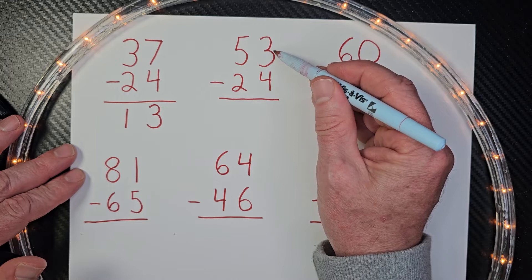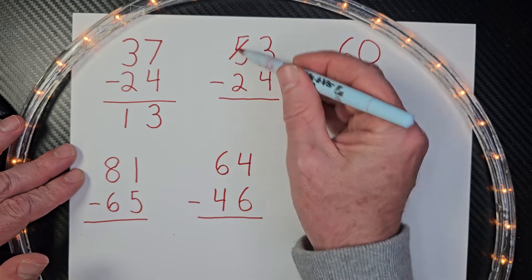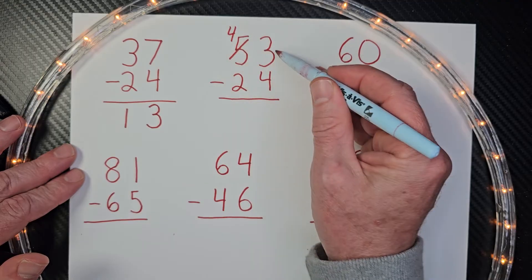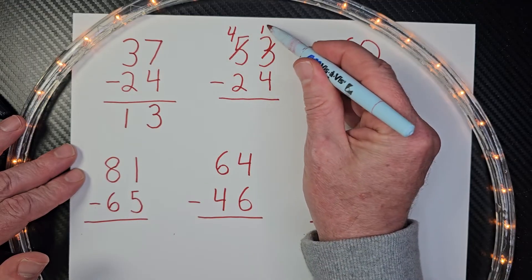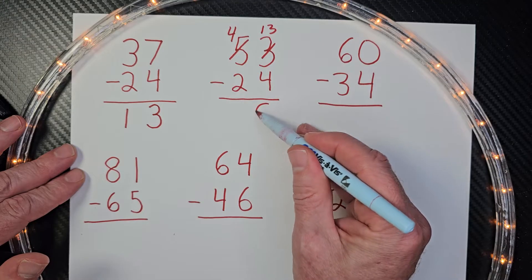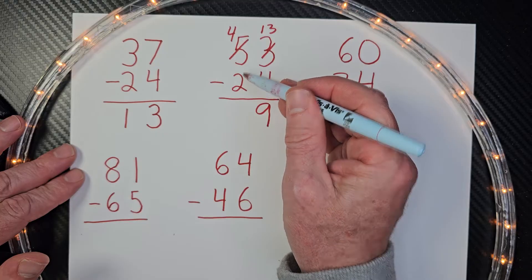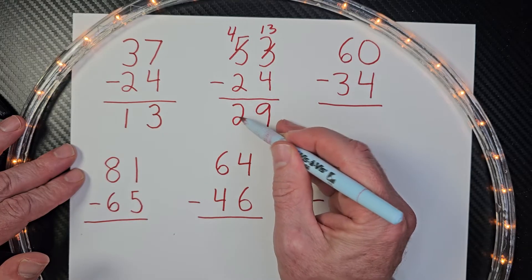We need to make that number right here bigger. So I need to borrow one from the five and that'll be a four. And then this will be 13. So 13 minus four would be nine. And now I subtract the tens. Four minus two. Two. All right.